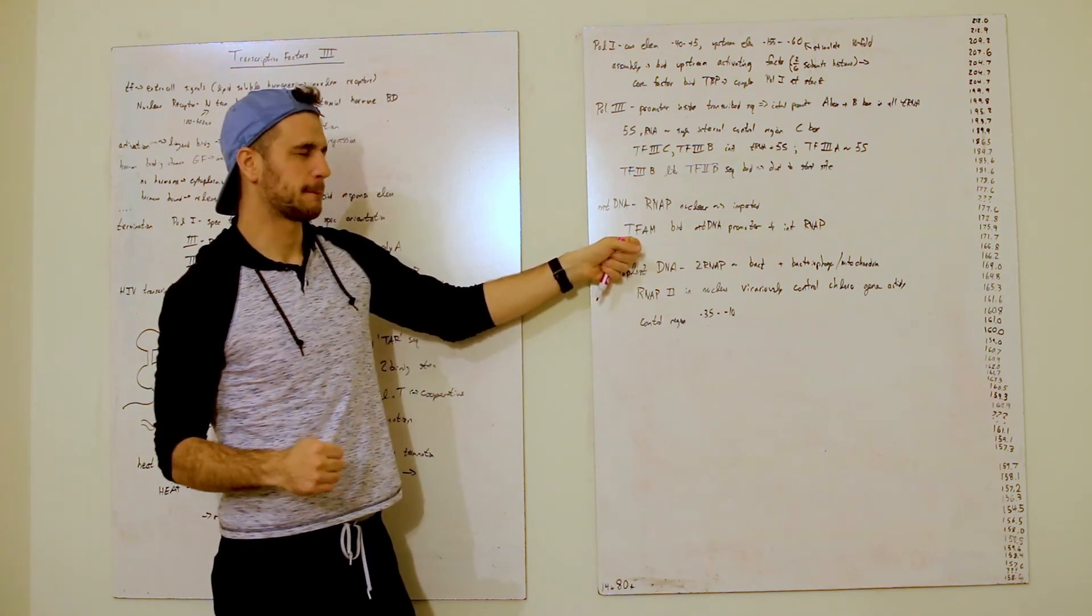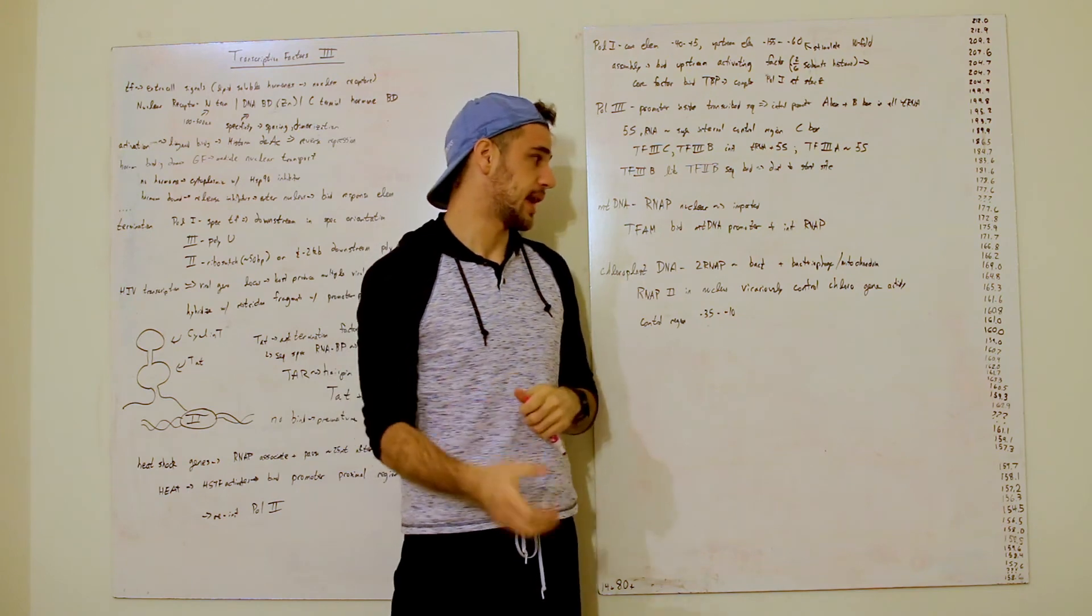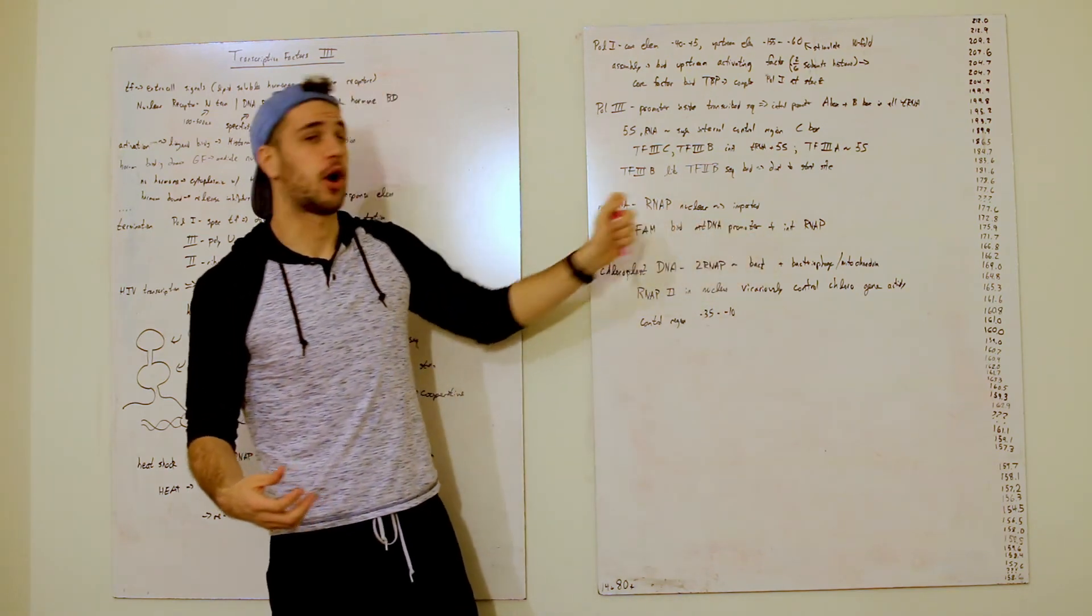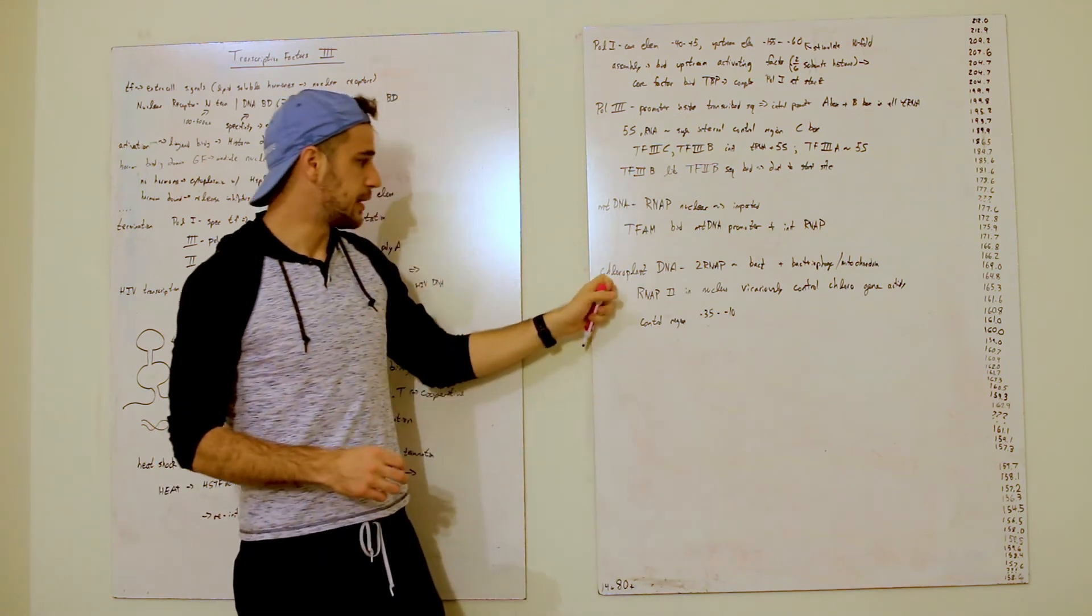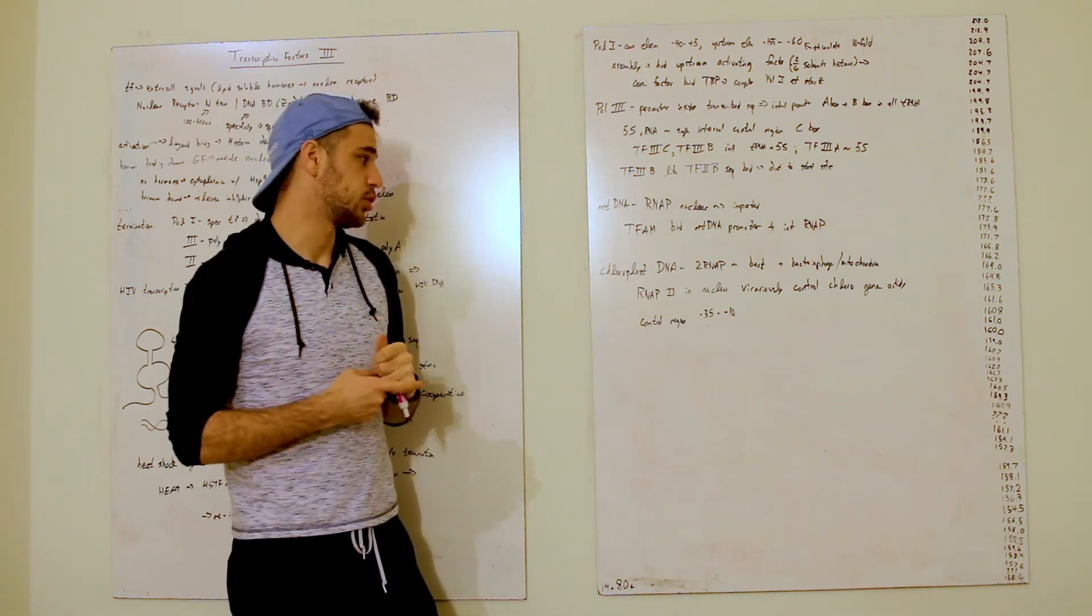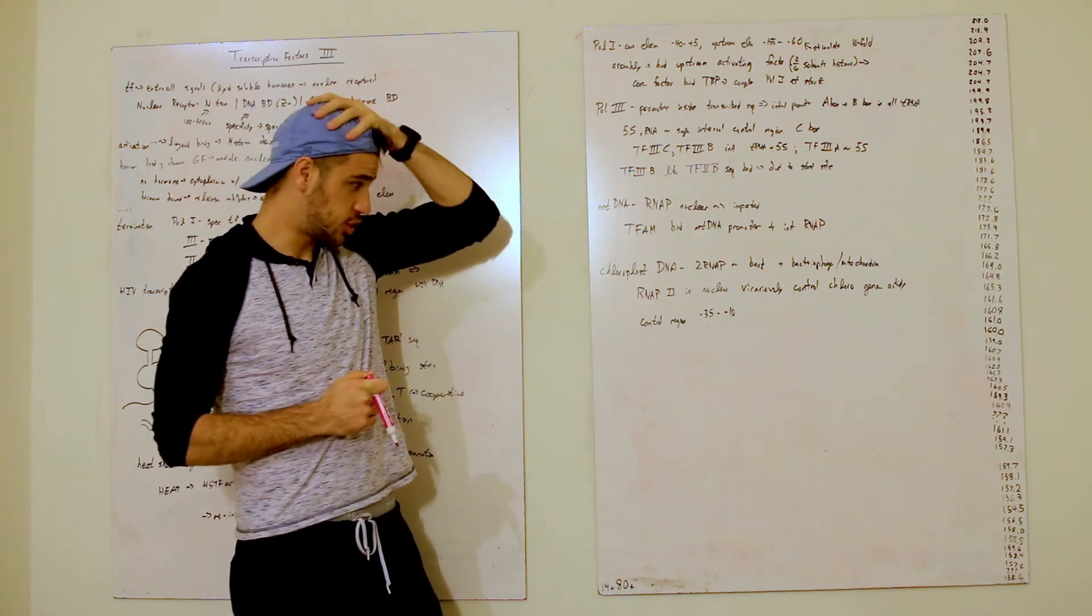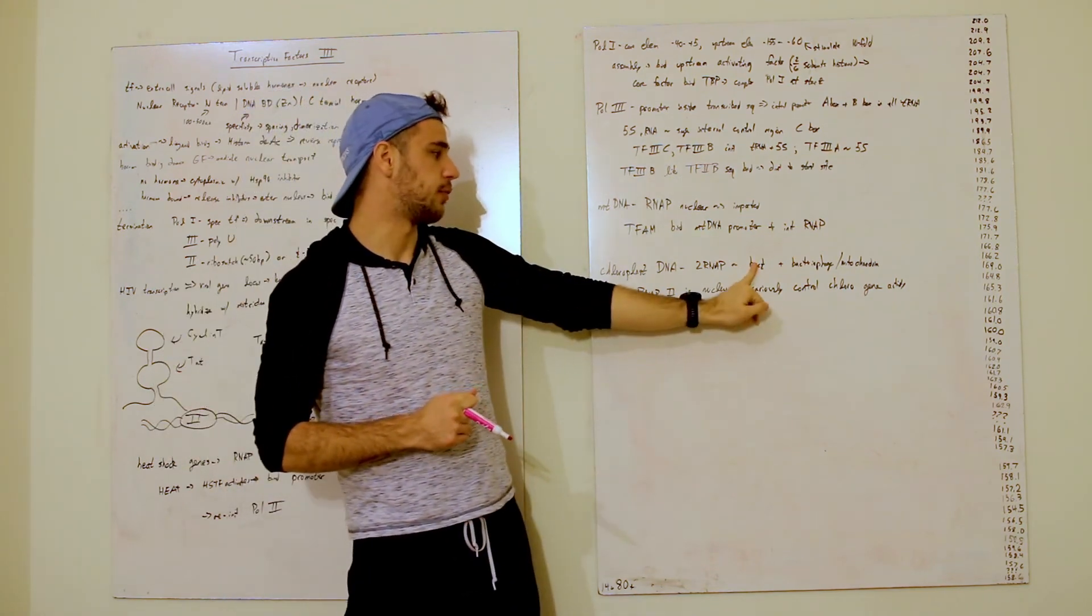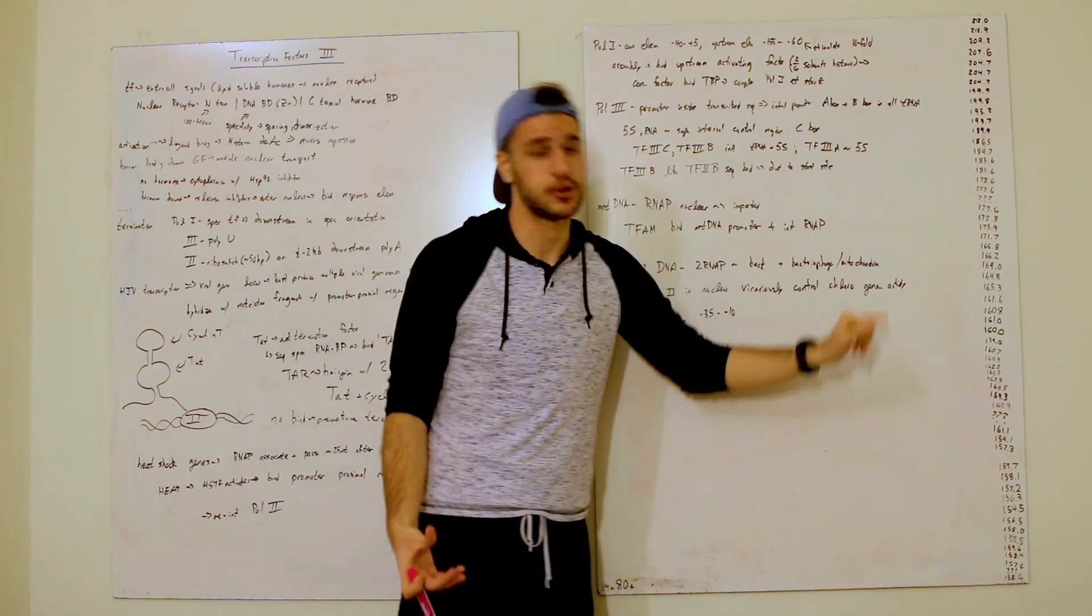And so, you've got this transcription factor, TFAM, that will bind the mitochondrial DNA at the promoter and then initiate RNAP polymerization. And then you've got chloroplast DNA, which chloroplast DNA has two polymerases. One that evolved from, that is quite similar to bacteria and one that is quite similar to bacteriophage or mitochondria.